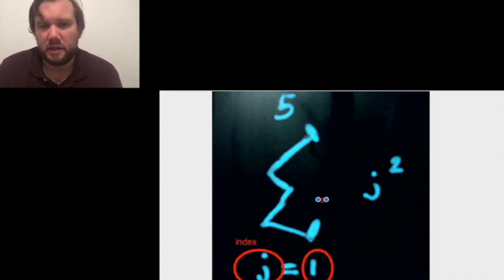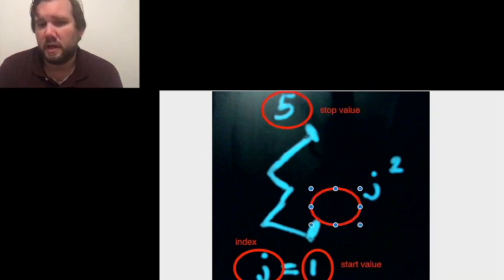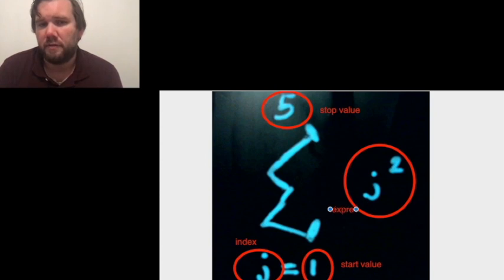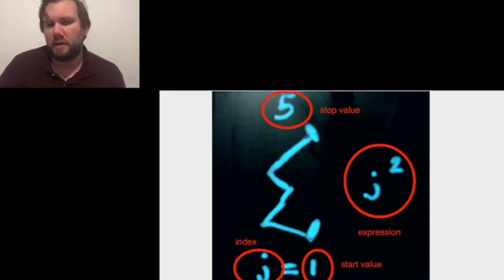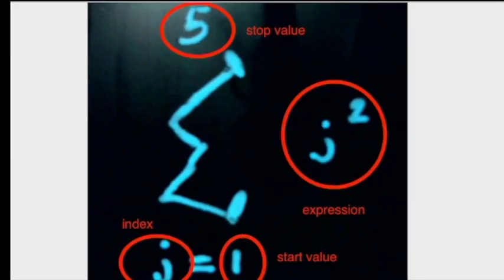Here the index is j. Then there's going to be a start value for that index, which in this case is 1. There's going to be a stop value for the index, which is 5. And there's going to be an expression involving the index, which here would be j squared. So those are the pieces you're looking for: the index, start value, stop value, and expression.